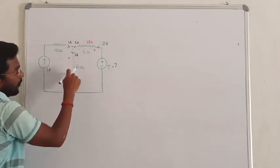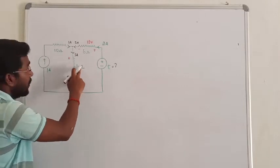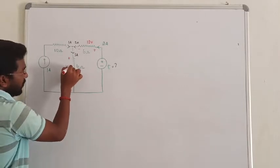That's why the current is 3. It drops by resistance 6. So, 3 into 6 is 18 voltage. Yes or no?